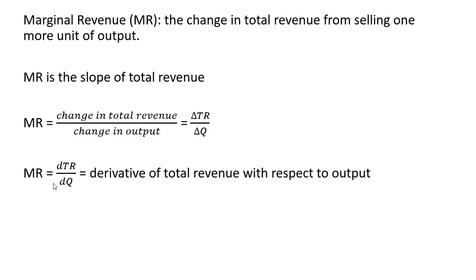In calculus, we can think of marginal revenue as a derivative. A derivative is a slope function. So if we take the derivative of a total revenue equation with respect to output, we get marginal revenue.